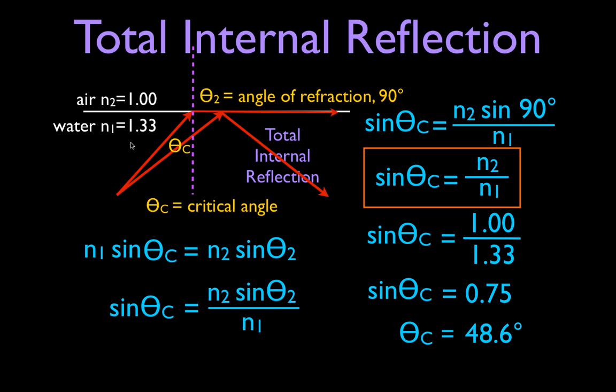That is the general background and description of total internal reflection. The equation sine of the critical angle equals N2 divided by N1 is how you calculate the critical angle. I hope that was helpful — if you followed those steps, you can solve those problems. If you found it helpful, please leave a thumbs up or a comment below. Thank you very much.